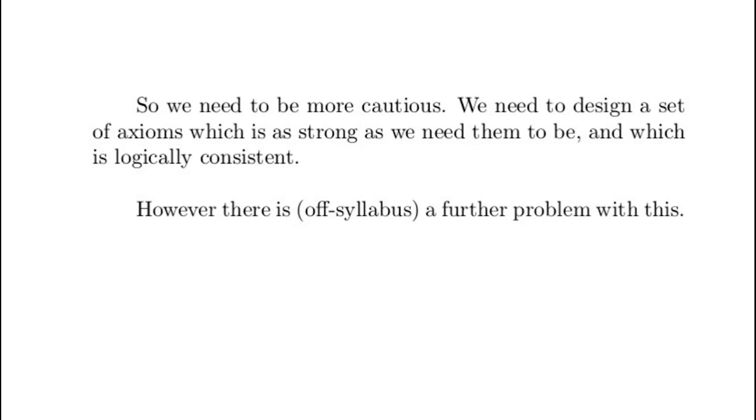So what we're going to do is we're going to have a list of axioms, most of which will say when we allow ourselves to think of a set as existing. And this set is going to have to satisfy two opposing requirements. It's going to need to be powerful so we can prove lots of stuff, but not too powerful so we don't get to prove zero equals one or the moon is made of green cheese or something like that.